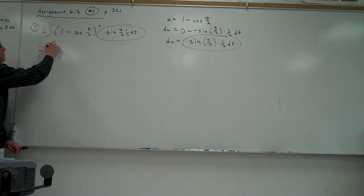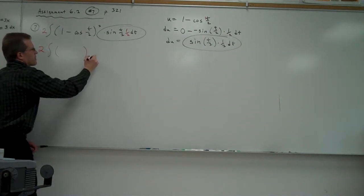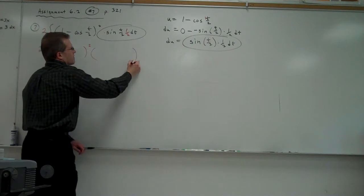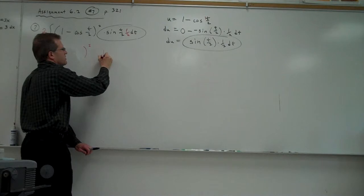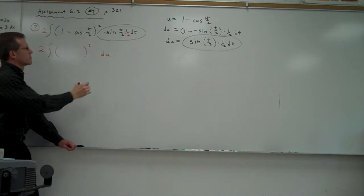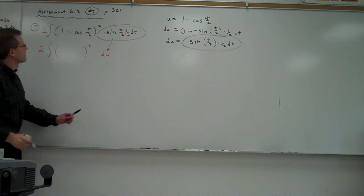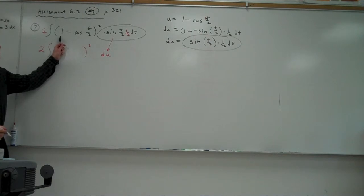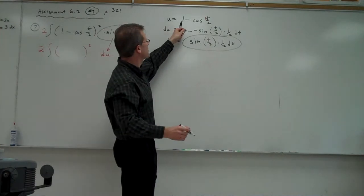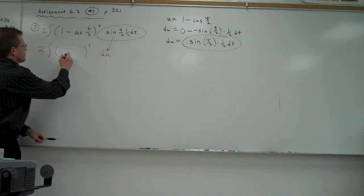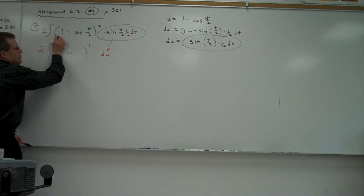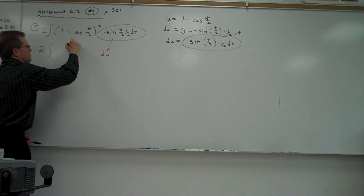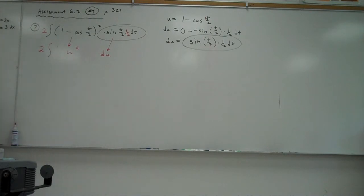So now I can make my substitution. For this entire expression here, I'm going to change that to du. So this whole thing here is equal to du. What am I going to substitute in for 1 minus the cosine of t/2? That's what u equals. We'll just call that u squared. So this got substituted in there.